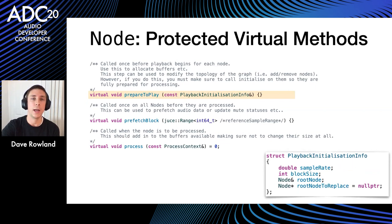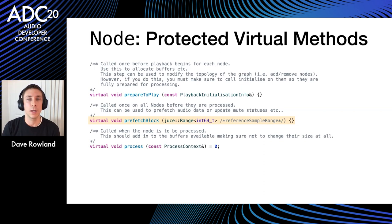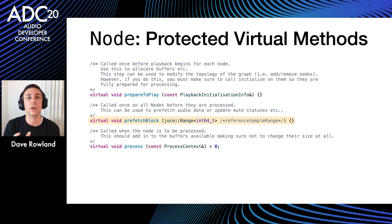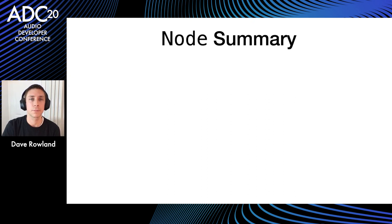The protected virtual methods you implement include a prepare call providing sample rate and block size, plus the root node being replaced — enabling introspection of the old graph to copy history buffers. There's a prefetch call invoked for all nodes before any processing happens, useful for setting file read positions or updating mute statuses. You receive a reference sample range indicating the number of samples to be processed, also usable to synchronize to a timeline. Then there's the process call where you fill audio and MIDI buffers.